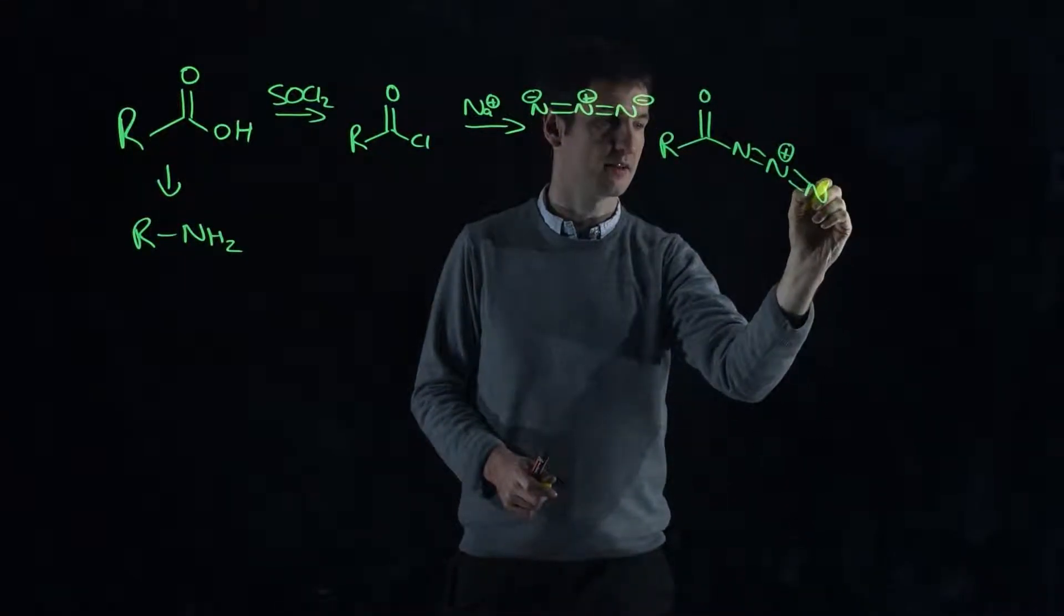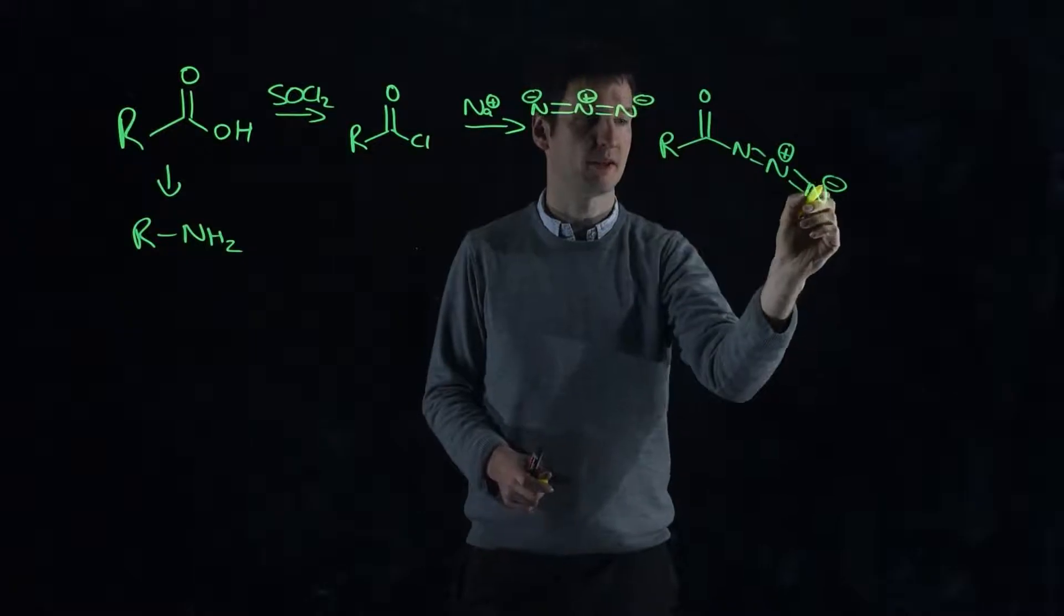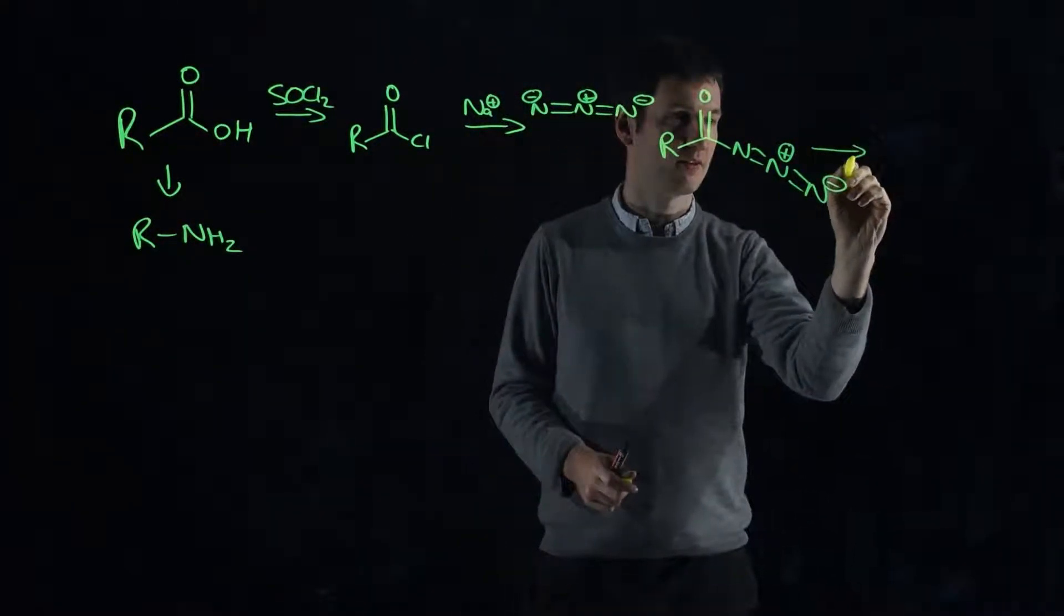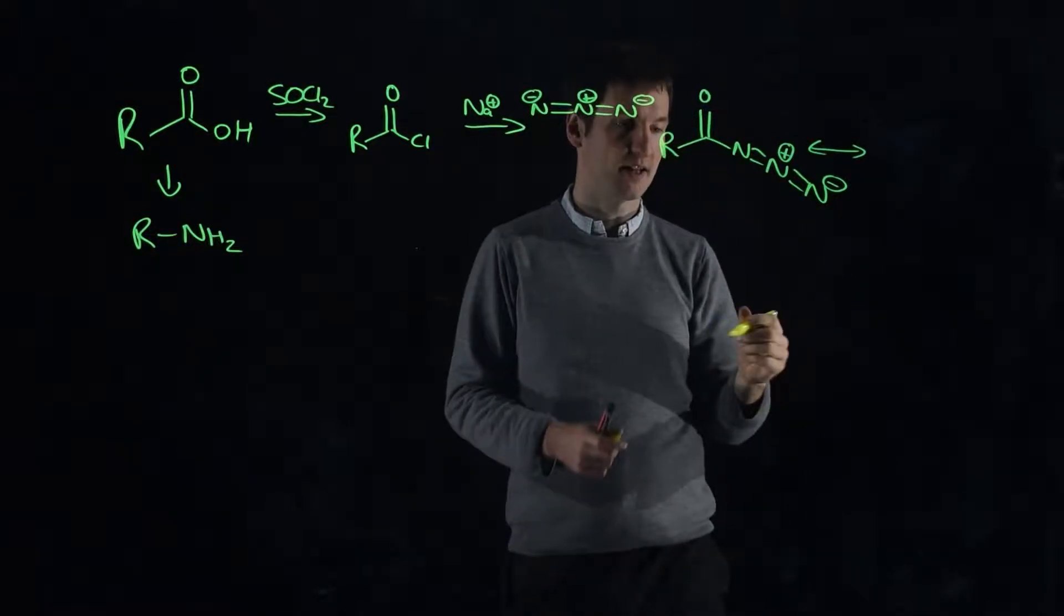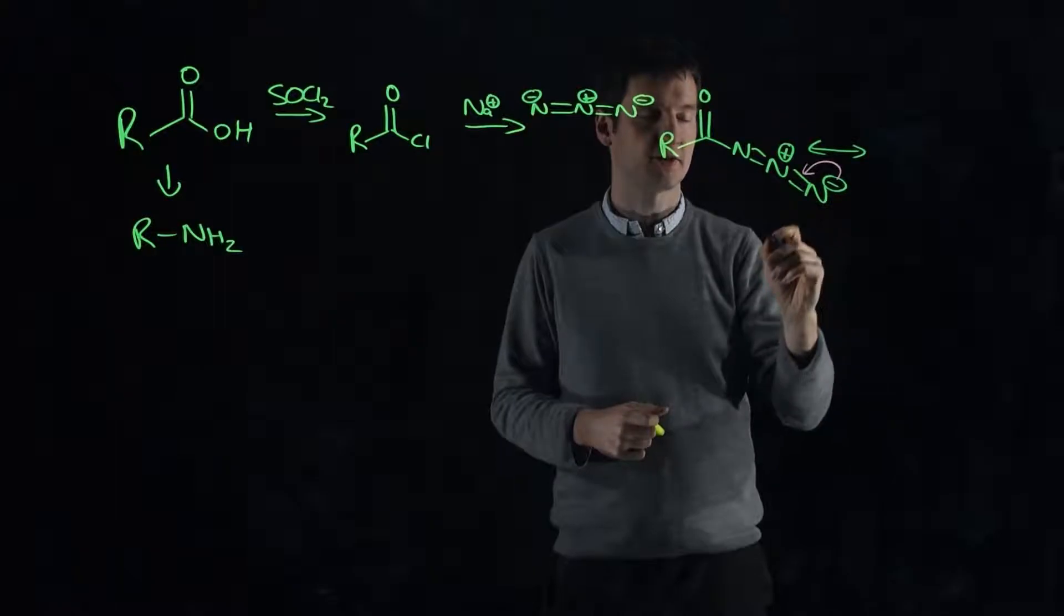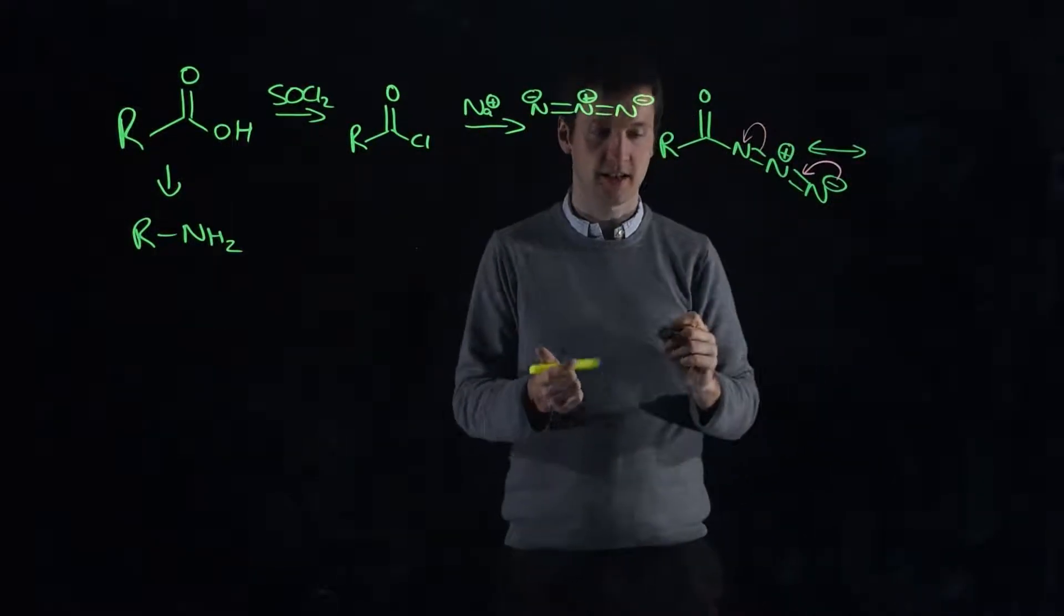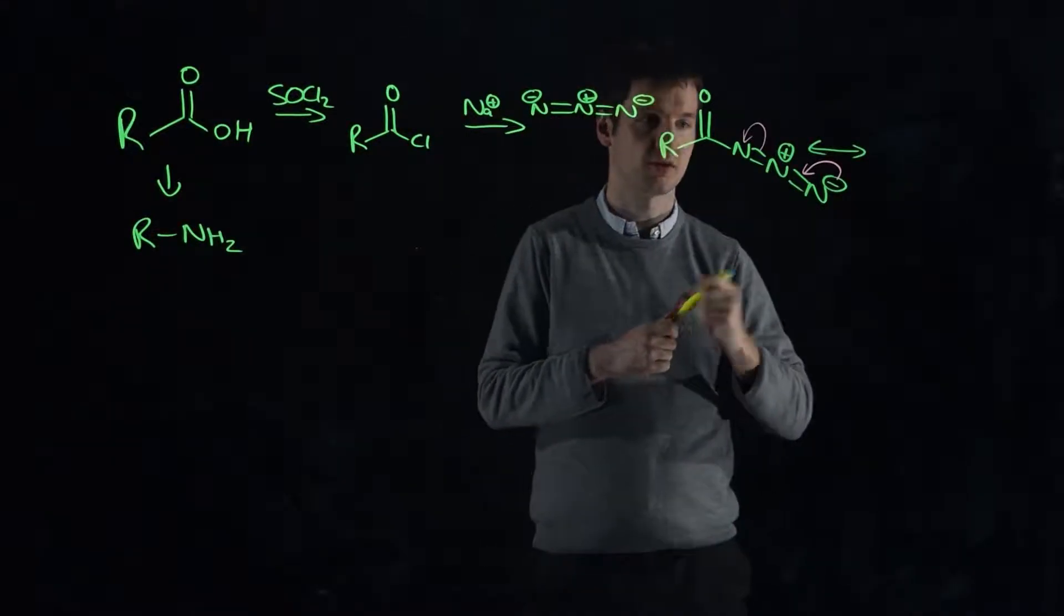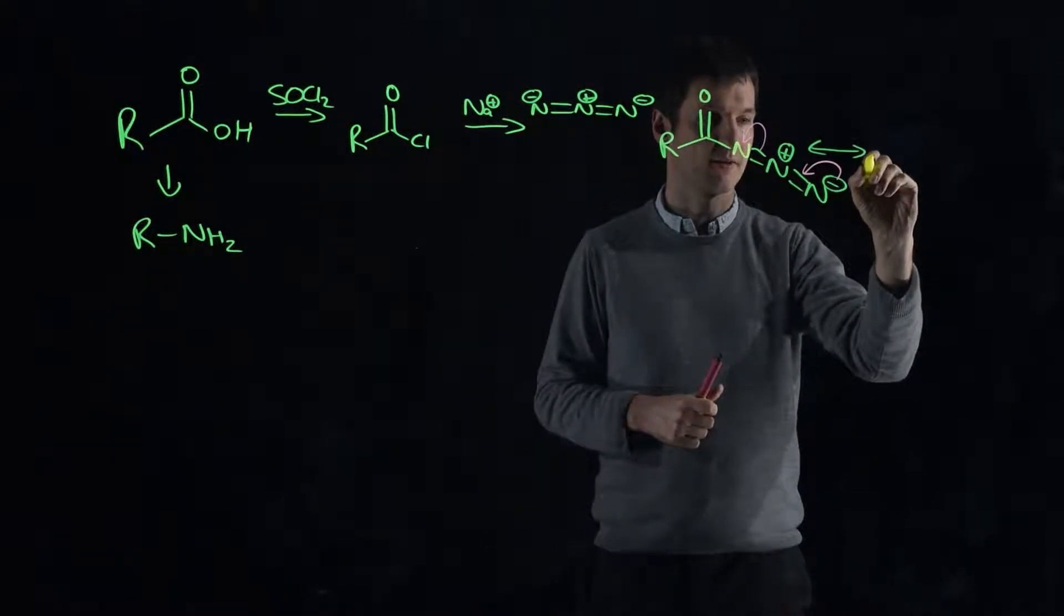Nitrogen in the center has a positive charge and in this resonance form the nitrogen at the far end has a negative charge. As you may have seen with azides before, they can resonate - we can push that pair of electrons in here and that pair of electrons onto that nitrogen, and the negative charge just passes back and forth between the two nitrogens.